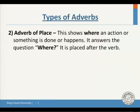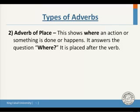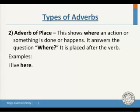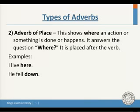Type two is the adverb of place, which shows where an action is done or happens. It answers the question 'where' and is placed after the verb. Examples: 'I live here' — 'here' comes after the verb 'live.' 'He fell down' — 'down' is the adverb of place following the verb 'fell.'